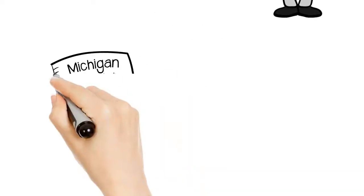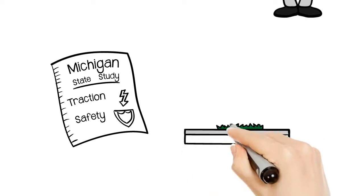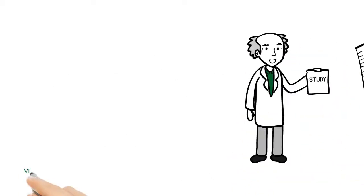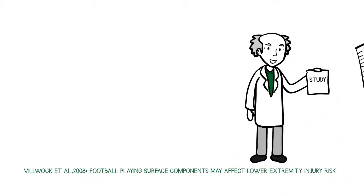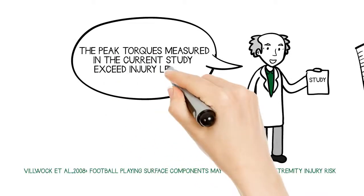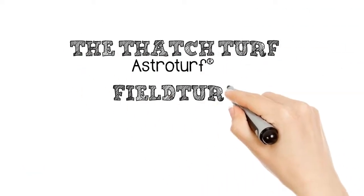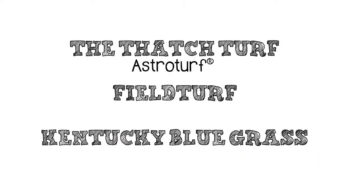The leading thatch guys use their Michigan State study to talk about their traction and safety. However, the study uses a non-approved, unrealistic full foot stance. They talk about being closest to grass, but the authors state that the peak torques measured in the current study exceed injury levels. The thatch turf, FieldTurf, and even Kentucky Bluegrass all exceed safe limits. Unrealistic test. Unrealistic results.